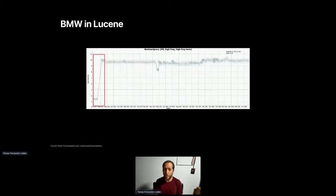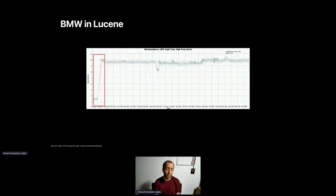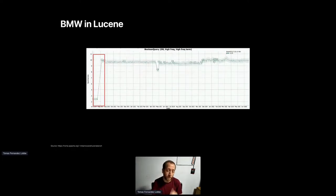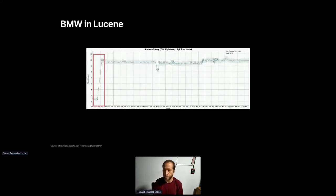The performance improvements in Lucene were actually pretty amazing. These are Mike McCandless's nightly benchmarks — if you aren't familiar with them, the link is below. This shows throughput, so higher is better. This particular chart is for an OR query with two high-frequency terms, but there are many types of queries tested, and most of them showed a big performance improvement when this change was introduced in Lucene.